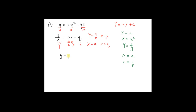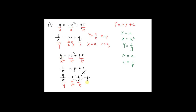For the equation y = px² + q/x, you can also change it to linear form by dividing every term by x². You have y/x² = p + q/x. Rearranging: y/x² = q·(1/x) + p. This is in the form Y = mX + c, where big Y = y/x², big X = 1/x, gradient m = q, and c = p.